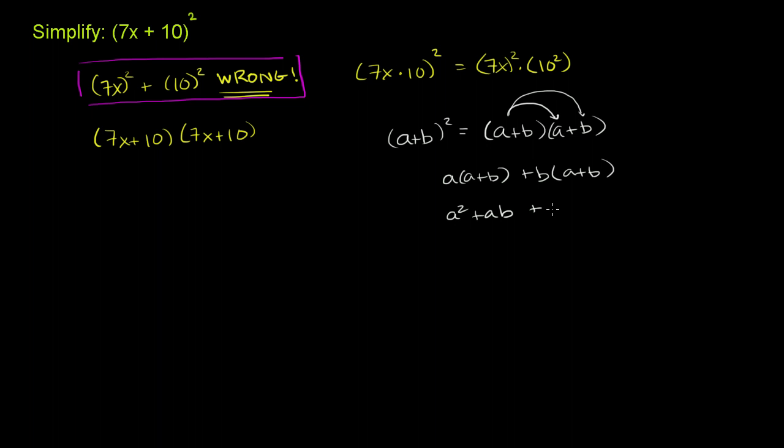Plus b times a is another ab. And I'm just swapping the order so it's the same as this. Plus b times b, which is b squared. These are like terms. So we can add them. One of something plus another of that something will give you two of that something. 2ab. We have a squared plus 2ab plus b squared.